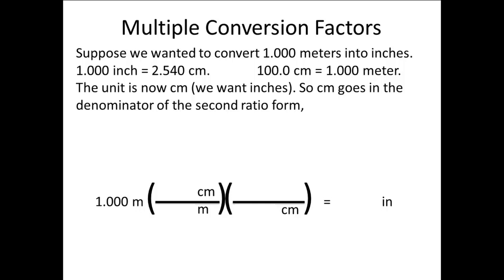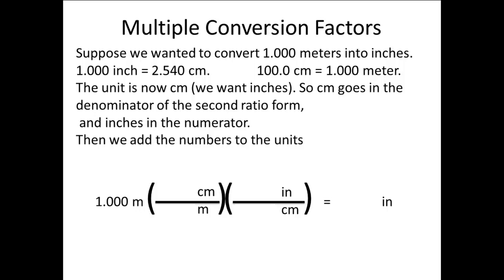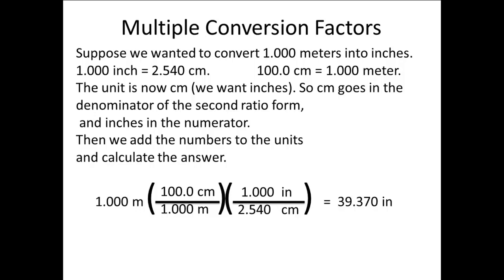Because meters have canceled out, the unit is now centimeters, and we want inches. So centimeters goes in the denominator of the second ratio form to cancel out the centimeters, and inches — the other unit of the second equivalence relationship — goes in the numerator. We cannot use the meter relationship because we would get meters back. Then we add the numbers to the units: 100 centimeters, 1 meter, 1 inch, 2.54 centimeters, and calculate the answer. 1.000 meters times 100.0 centimeters divided by 1.000 meters times 1.000 inches divided by 2.540 centimeters equals 39.370 inches.